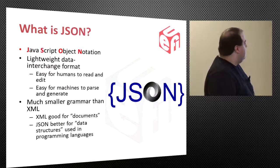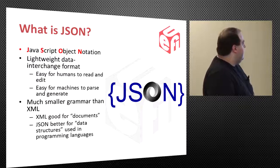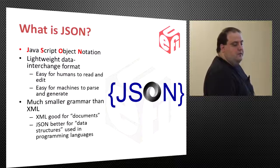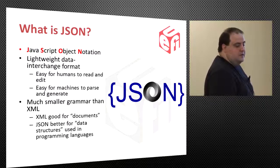What is JSON? JSON is JavaScript Object Notation. It's a lightweight data interchange format that's easy for humans to read and edit, and easy for machines to parse and generate. It has a much smaller grammar than XML. XML is good for documents, but JSON is better for data structures and programming languages.